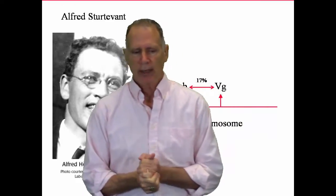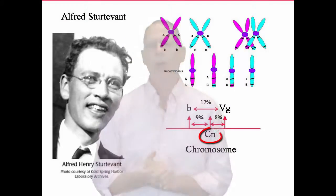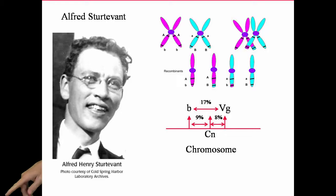So how do you test something like this? Sturtevant has some other data. He has a cinnabar eye. So he can take the cinnabar eye and he can see how the cinnabar eye fits into the picture. If he mixes the cinnabar and the vestigial wing with each other, he gets these recessive, cinnabar and vestigial showing up 8% of the time.